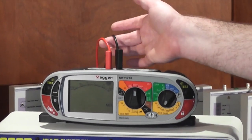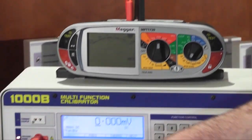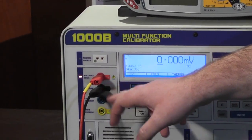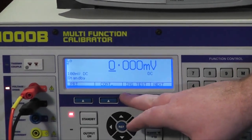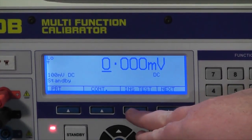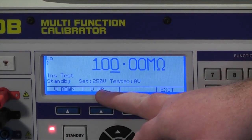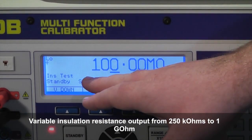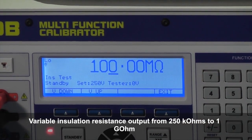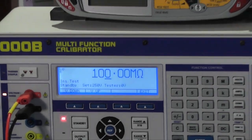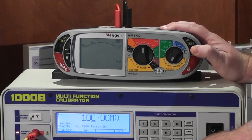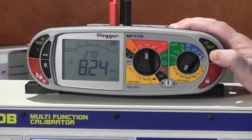Simply connect your insulation tester to the terminals on the 1000 series, select the insulation test function, select your voltage, in this case 250 volts, and set the required output, in this case 100 mega ohms. Then simply press test on your tester and press output on the 1000 series.